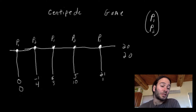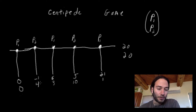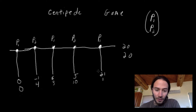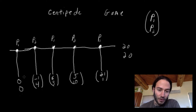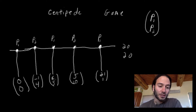However, if player one chooses to keep going, player two then gets the choice to either stop or keep going. If player two chooses to stop, player one gets negative one and player two gets four. I've written player one and player two up here as a reminder that these are the payoffs, where the top one is always player one. In the third step, player one makes a decision again; if he chooses to stop, he gets a payoff of six and player two gets a payoff of three.